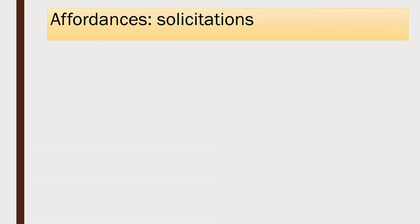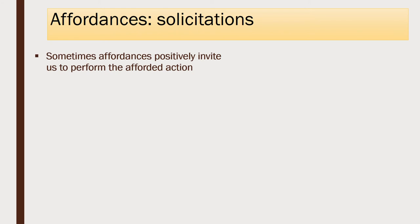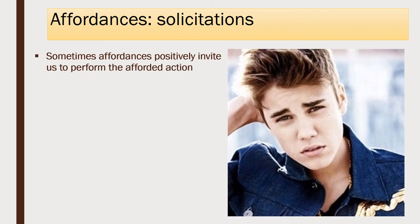One last note on affordances: some affordances are what we call soliciting affordances. Rather than representing a mere possibility of action, sometimes we perceptually represent an item as positively calling out for us to perform the afforded action. Many people report having the following visual experience: they see Justin Bieber's face as calling out to be slapped — there's something about his face that invites slapping. So here we don't merely visually represent the property of being slappable; we represent the property of demanding slapping. Many of the most vivid experiences of affordances are soliciting affordances, and many of the examples I discuss in the paper are these invitation-like affordances.